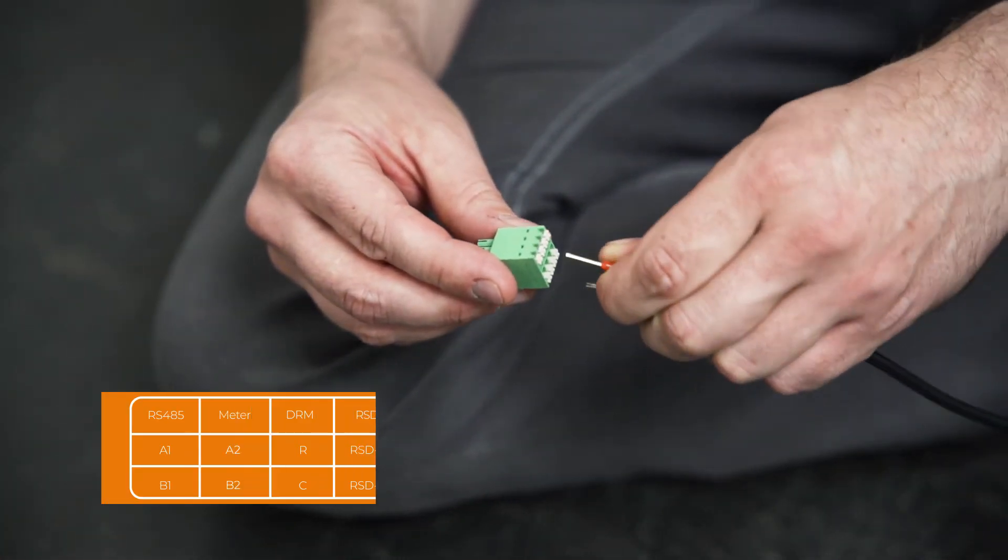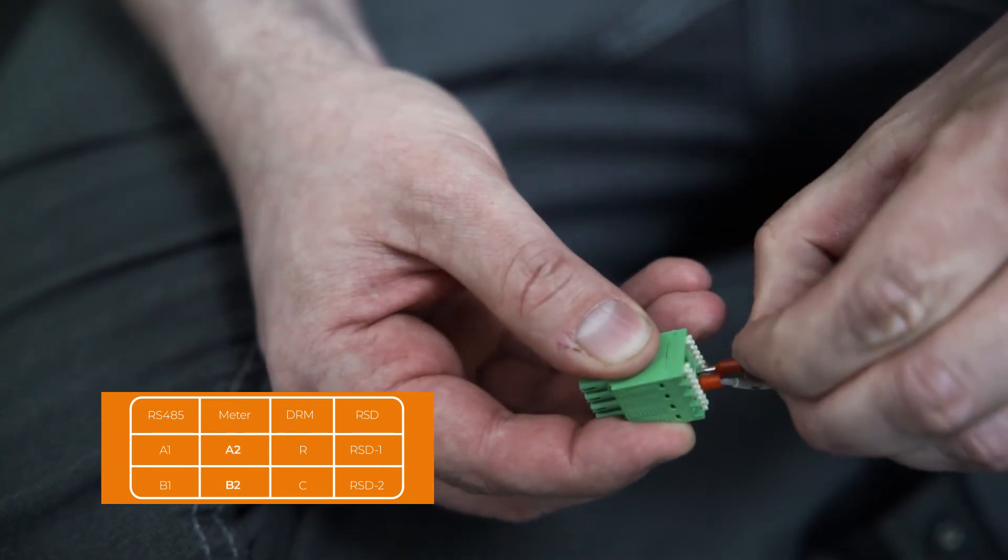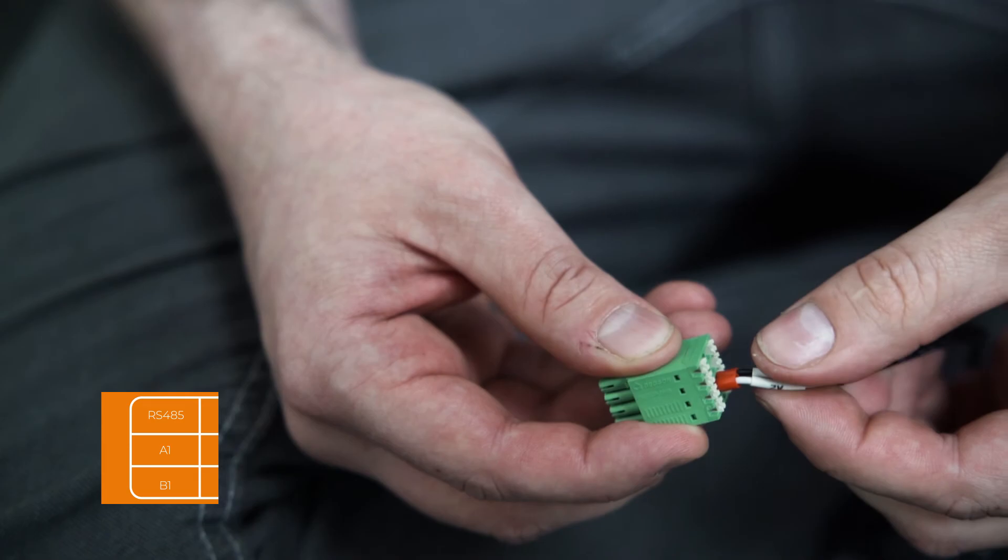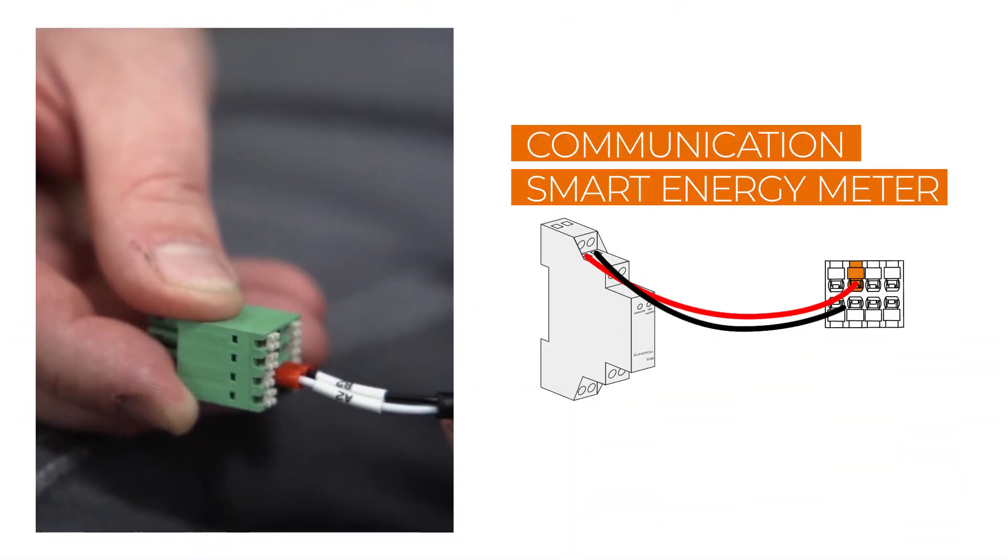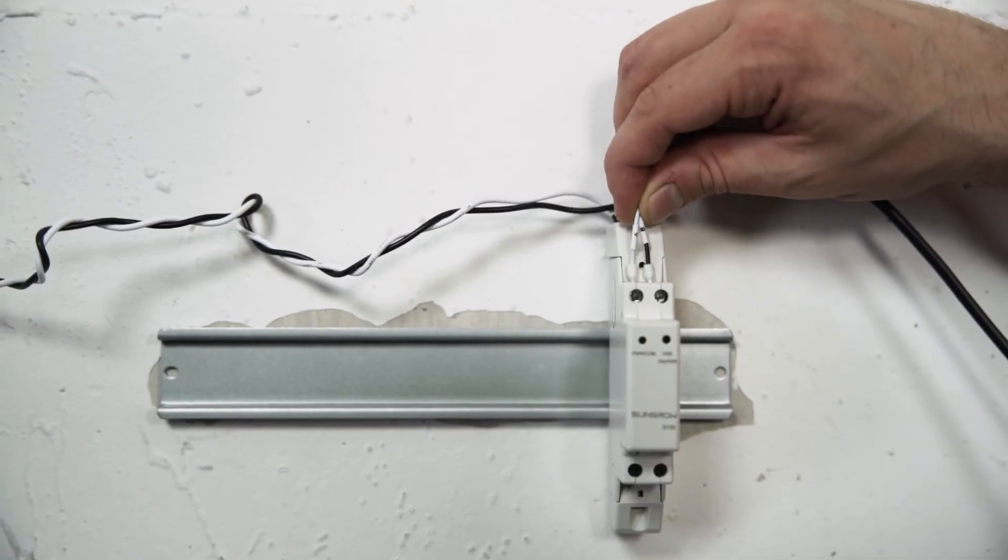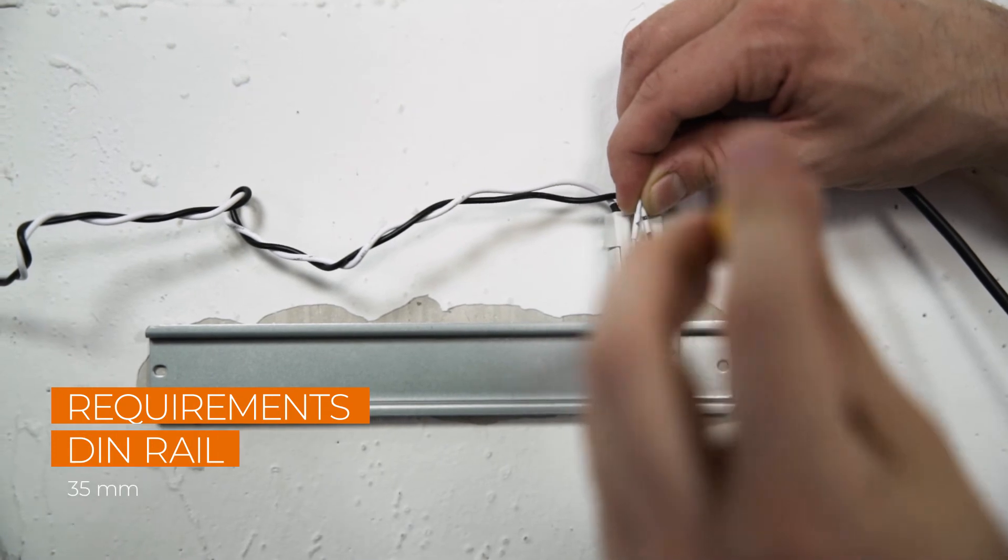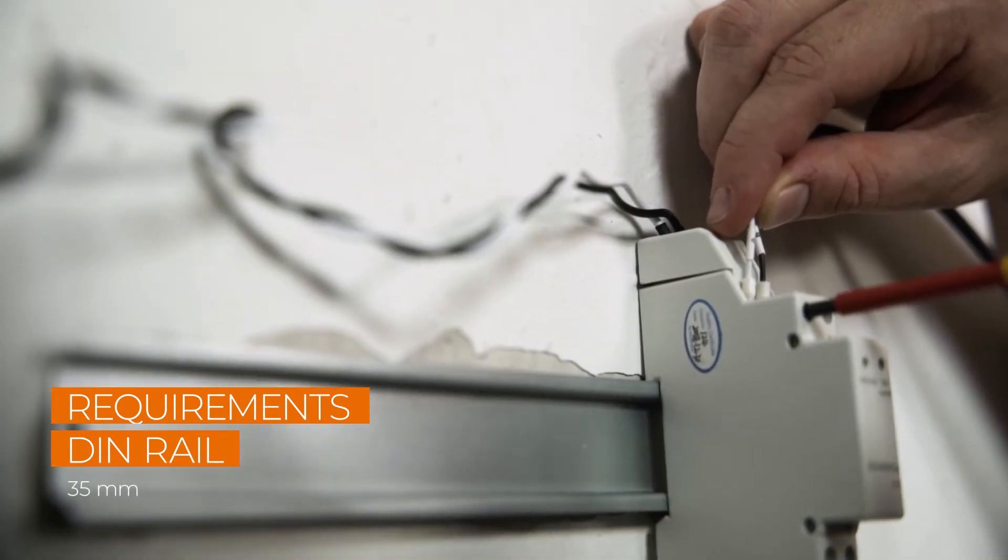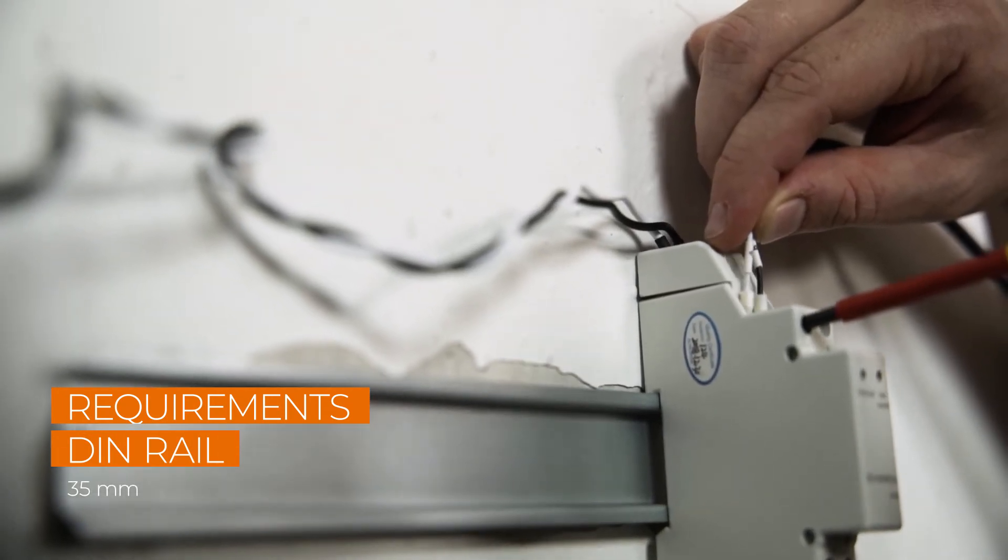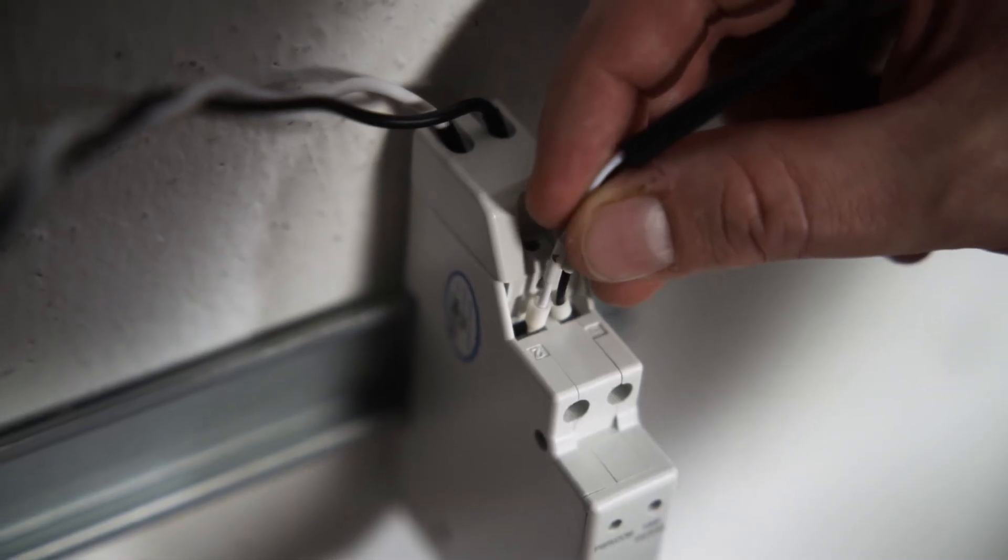At the left side of the inverter, you will find a table with information about which cable has to be plugged into which port. The smart meter is connected to the ports A2 and B2. The other end of the cable needs to be connected to the smart meter itself. Mount the meter to a DIN rail and connect the communication cable RS485A to pin 2 and RS485B to pin 5.